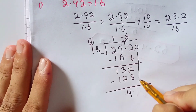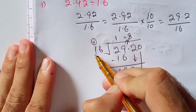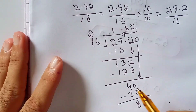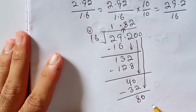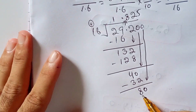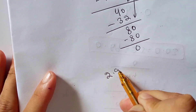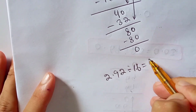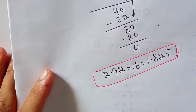Since 4 is less than 16, we put 0 in the dividend and bring down. 16 goes into 40: 16 times 2 is 32. Subtract 32 from 40, the remainder is 8. Since 8 is less than 16, we put 0 and bring down 8 to make it 80. 16 times 5 is 80. Subtract 80 from 80, the remainder is 0. So 2.92 divided by 1.6 equals 1.825.